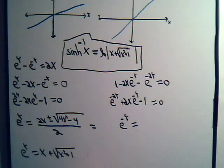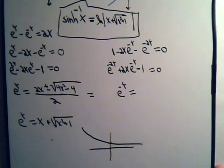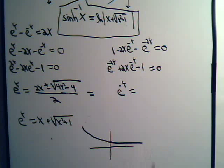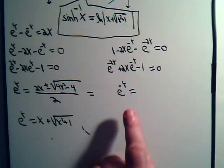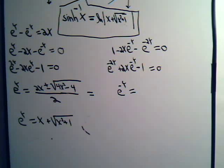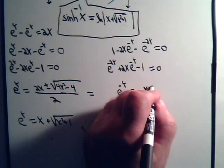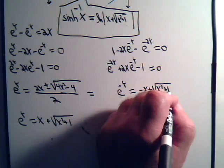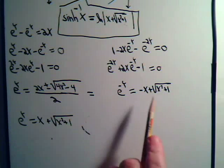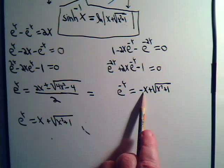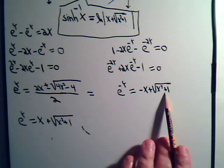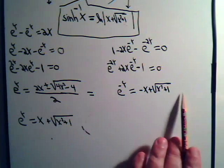We keep only one solution because e to the minus y is always positive — it never becomes zero. When we solve with the quadratic formula, the solution we keep is minus x plus the square root of x squared plus 1. If x is positive, we have a negative x value, but we're adding to it a number greater than that negative x value, so it comes out a net positive number.